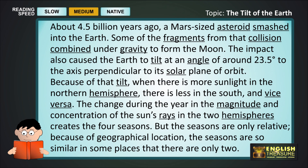Because of that tilt, when there is more sunlight in the northern hemisphere, there is less in the south, and vice versa. The change during the year in the magnitude and concentration of the sun's rays in the two hemispheres creates the four seasons.